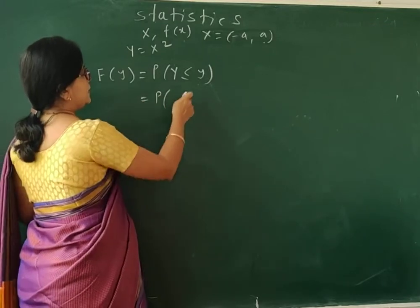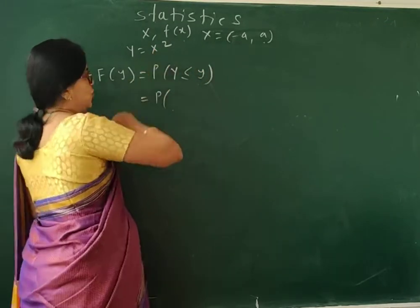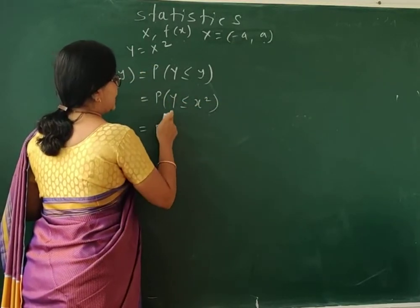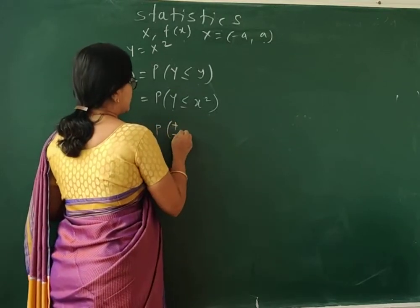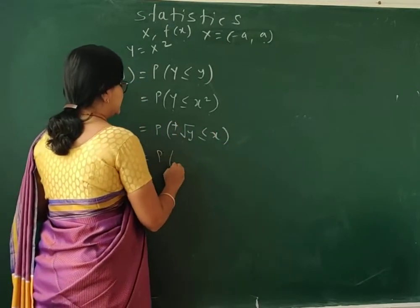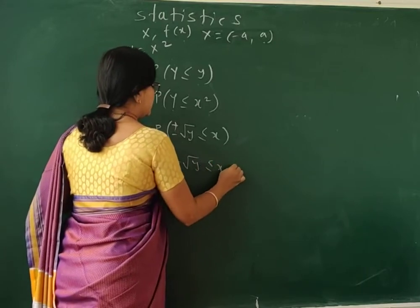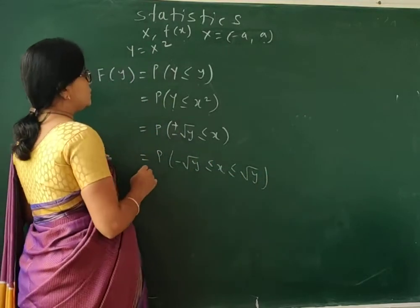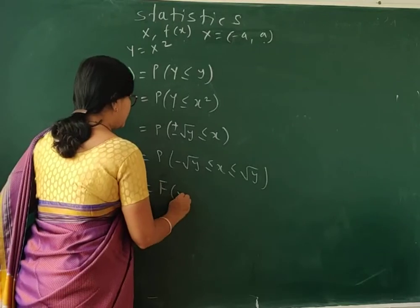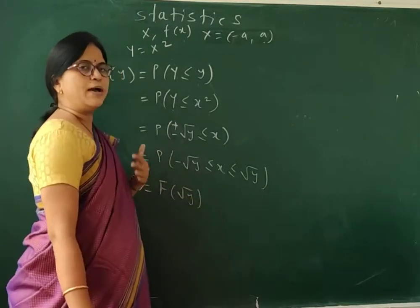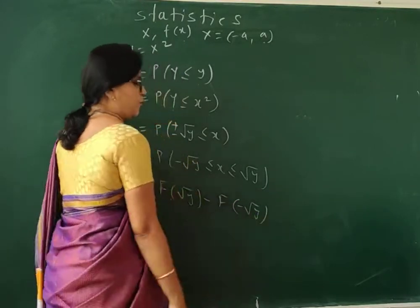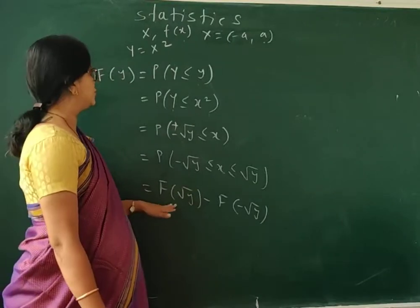That means we can replace Y with X². So P(Y ≤ y) becomes P(X² ≤ y). Taking the square root, this is equivalent to P(−√y ≤ X ≤ √y). By using the property of the distribution function, we can write this as F(√y) − F(−√y). So this is the distribution function of Y, when Y = X².